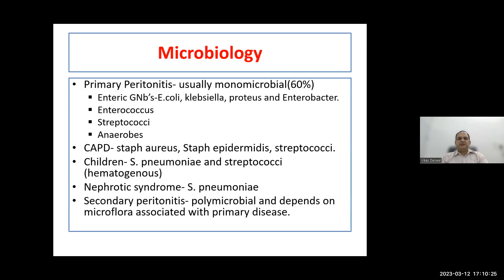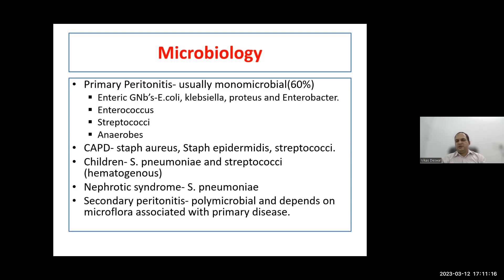E. coli followed by Klebsiella and other enteric gram-negatives like Proteus and Enterobacter are common causes of primary peritonitis. Enterococcus, anaerobes, and streptococci can also cause it. Special situations: in CAPD dialysis, because the catheter is inserted through the skin, Staphylococcus aureus and Staphylococcus epidermidis are the most common organisms. In children with nephrotic syndrome, complement deficiencies make Streptococcus pneumoniae the most common cause of primary peritonitis.